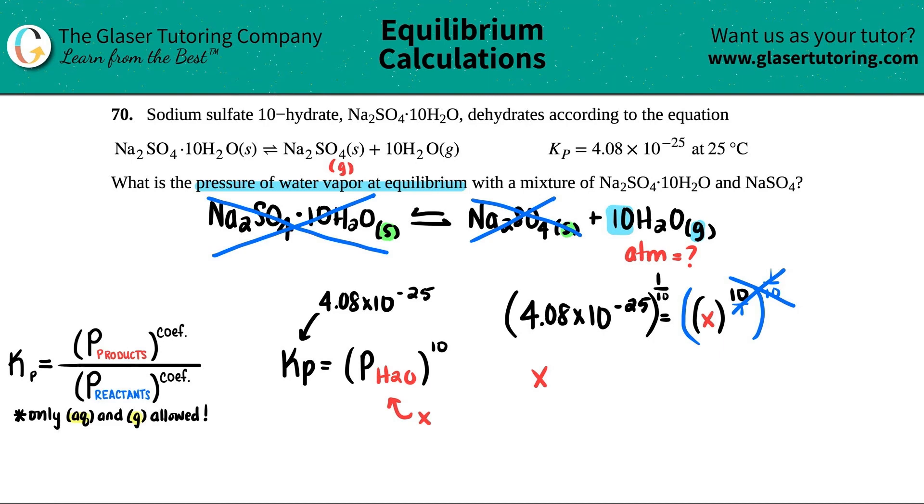So x, which was the pressure of H2O, equals - calculate - 4.08 times 10 to the negative 25, all raised to the 1 divided by 10. Make sure that's in parentheses so the calculator understands what you want to do. It looks like I have one number here with 3 significant figures, so I'll put this in scientific notation: 3.64 times 10 to the negative 3. Remember, only atm is allowed for a pressure unit in your Kp expression, so this has to be atm - can't be torr, can't be millimeters of mercury.